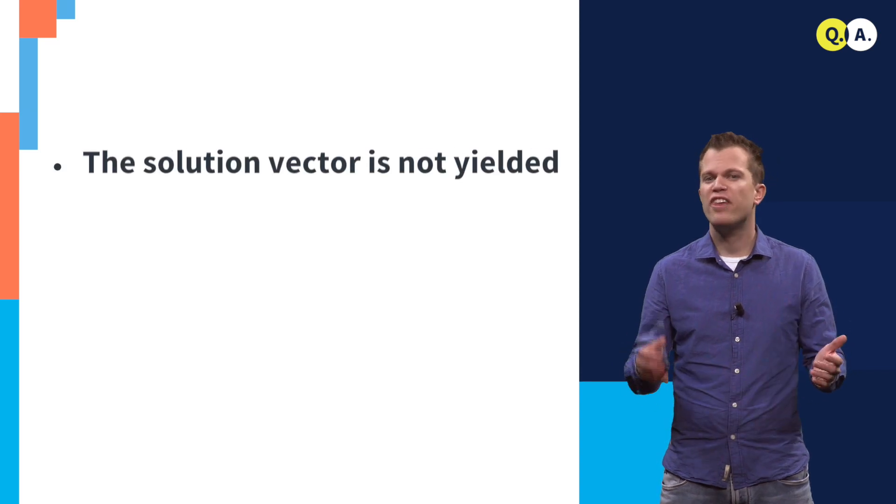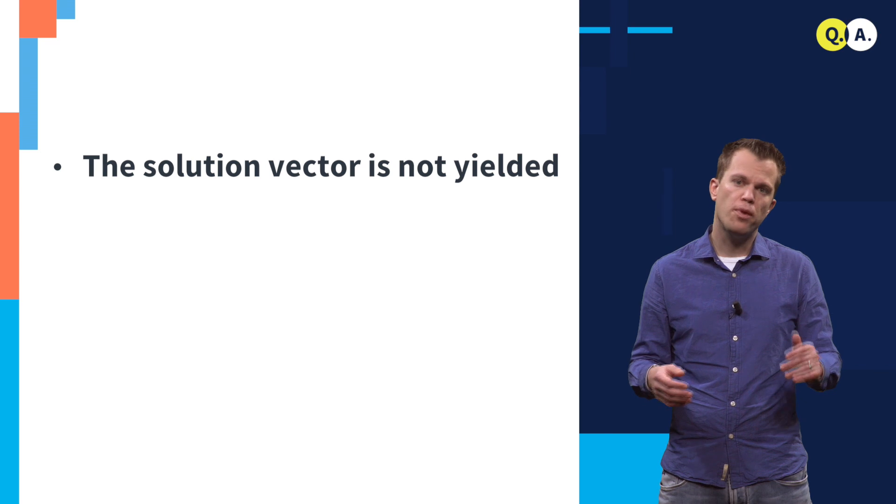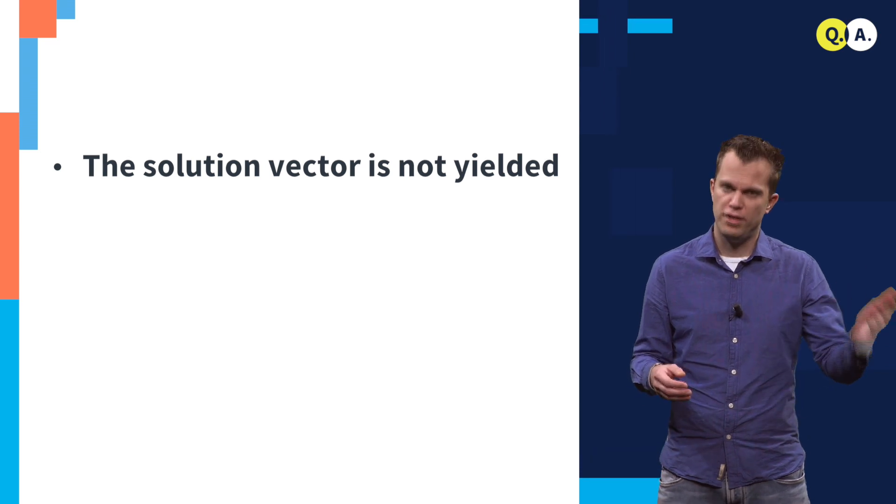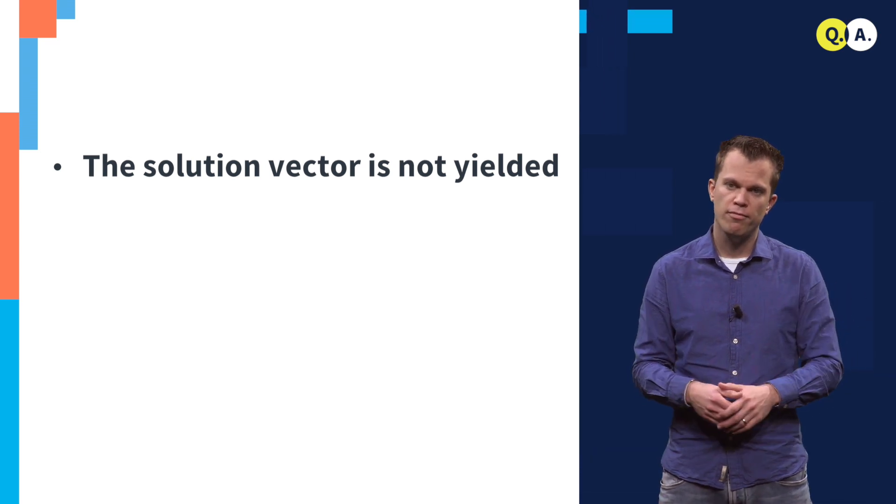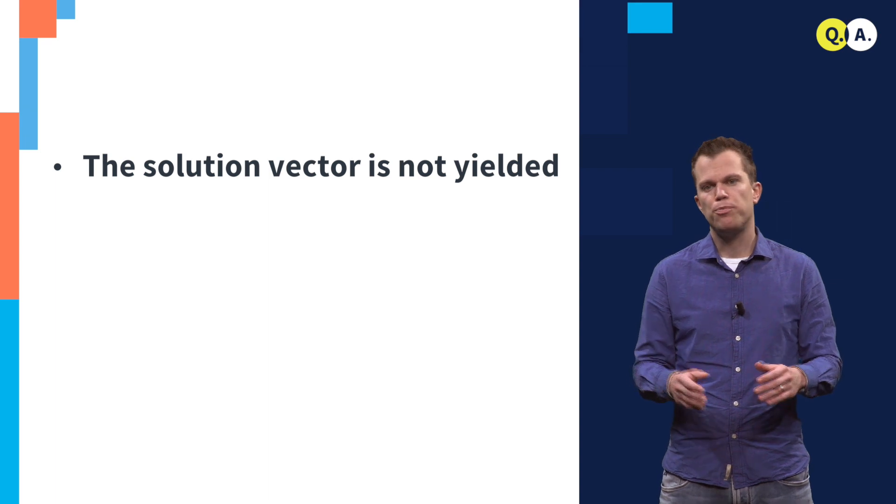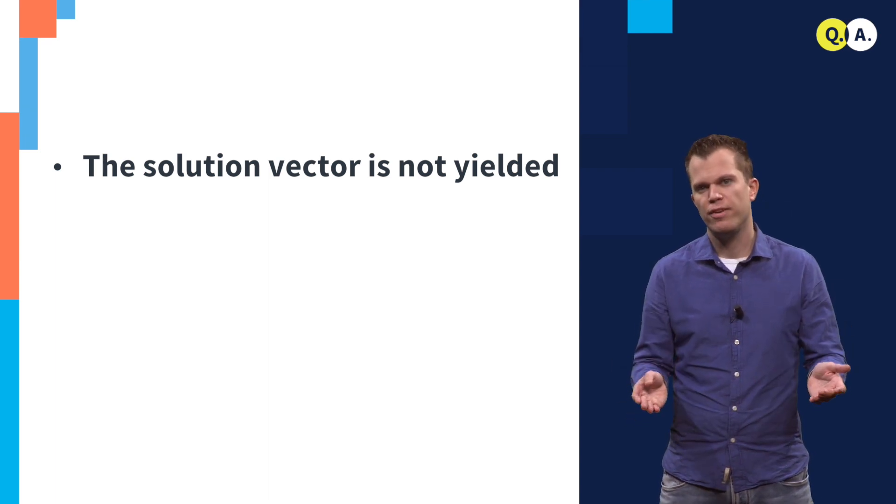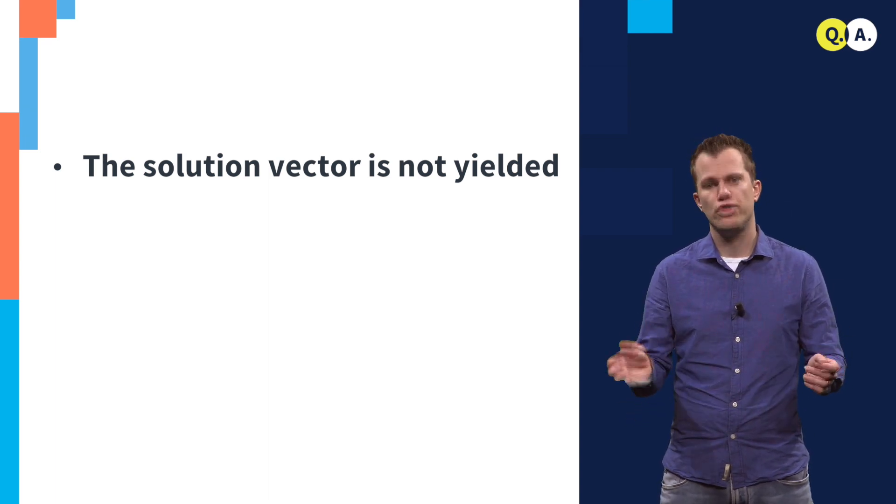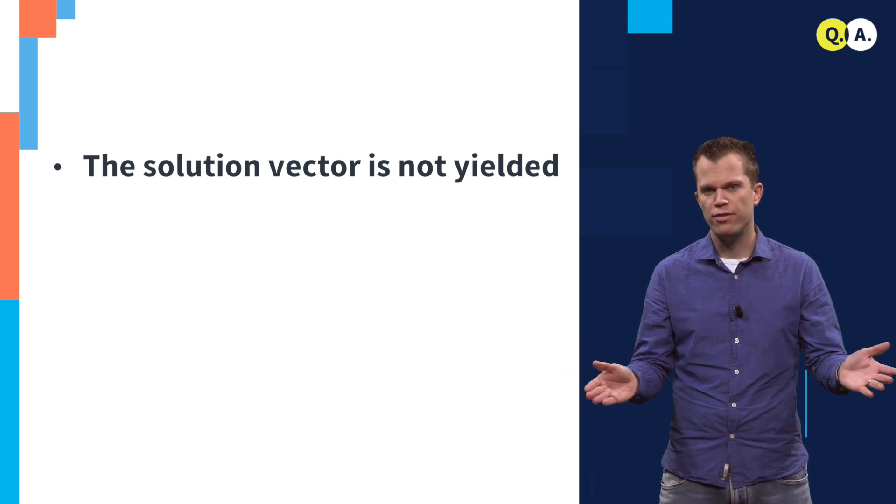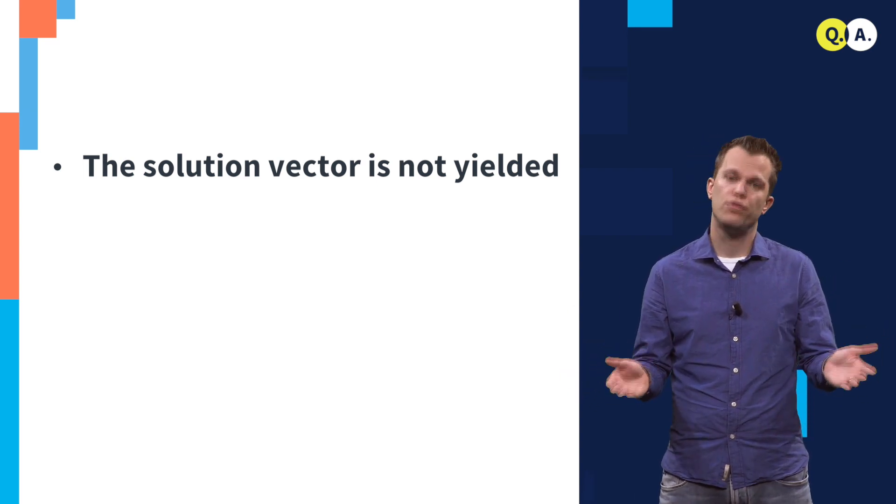First, the algorithm does not actually yield the solution vector corresponding to the linear equation that we are after. Rather, it prepares a quantum state that is proportional to the solution, and finding the full solution would provide a large overhead.